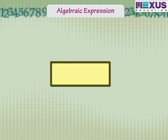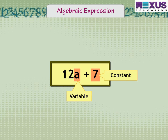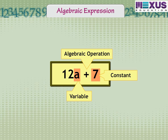Let us see one more example: 12a plus 7. Here the variable is a, 7 is a constant, and the operation used is addition. We can see that the value of a in the expression 12a plus 7 may be anything. The value of an expression changes with the value chosen for the variables it contains.